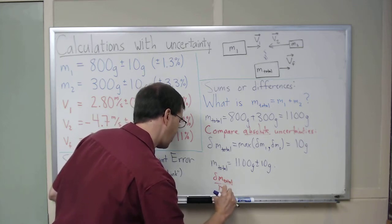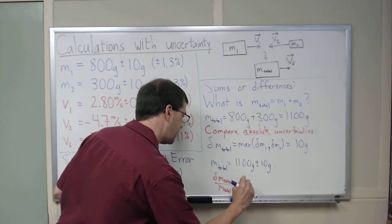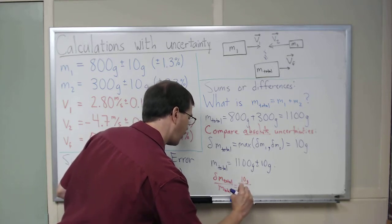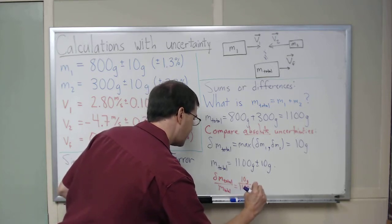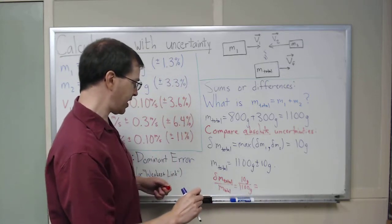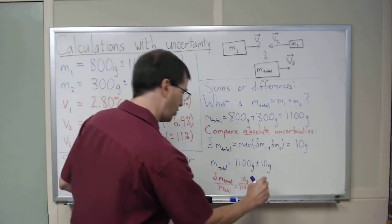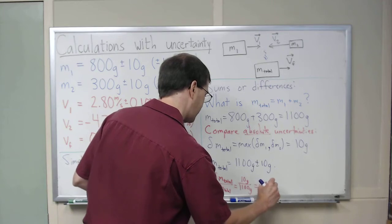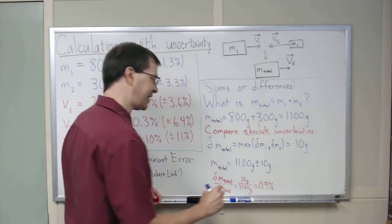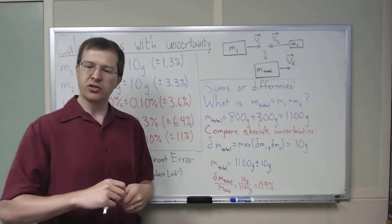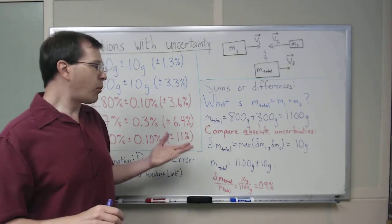Oh goodness, I've forgotten how to do this. This is going to be a little less than one percent, like 0.9 percent or something. Something like that will be my relative uncertainty. Should have a calculator with me, but that's the story.